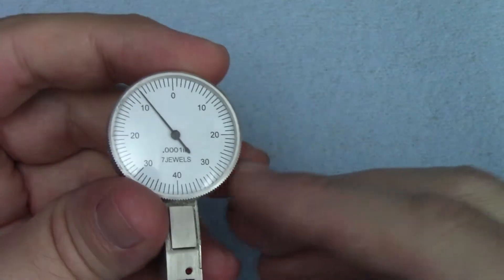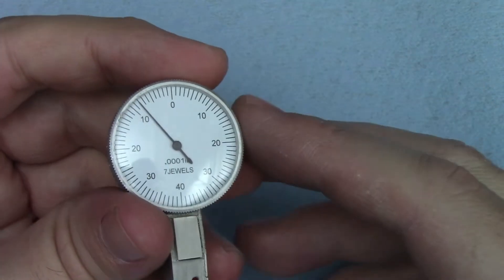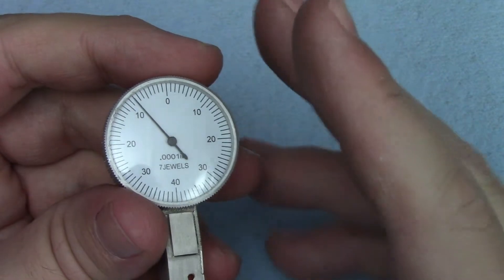On my tenths indicator, the numbered lines are every thousandth. I don't actually have any metric indicators handy, or I'd show you those too.